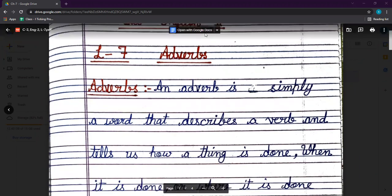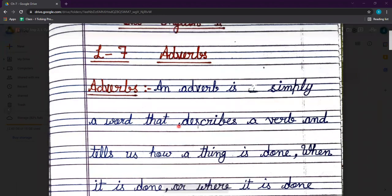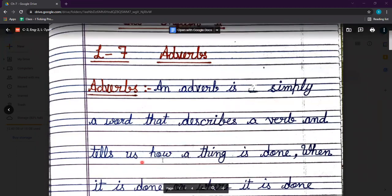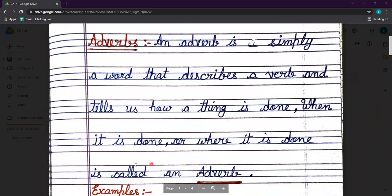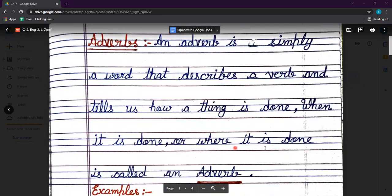Question on your screen, Definition of Adverb. An adverb is simply a word that describes a word and tells us how a thing is done, when it is done, or where it is done, is called an adverb. Okay?